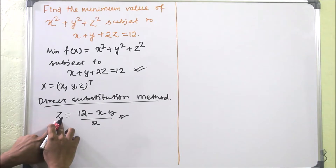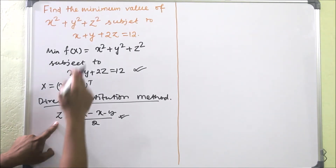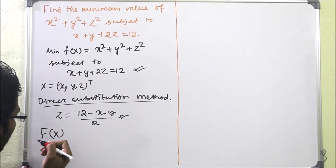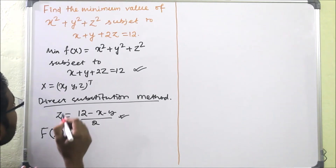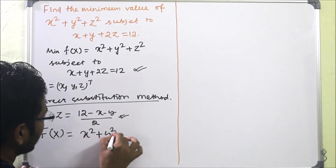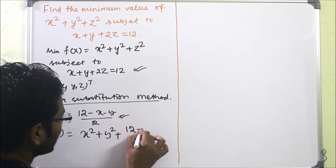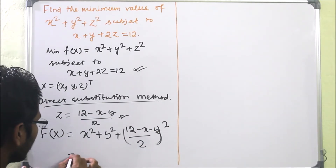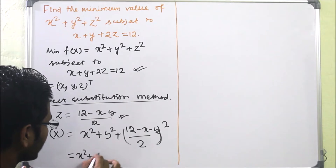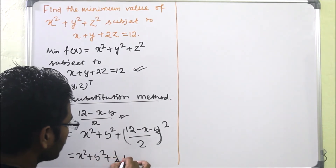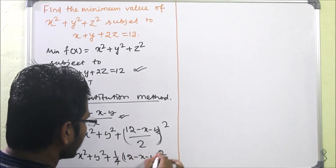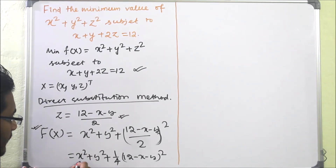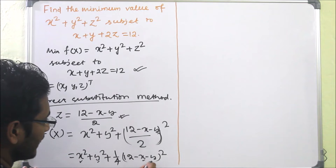Now we have z. We substitute this value into the objective function. The new objective function F(x, y) = x² + y² + (1/4)(12 − x − y)². We can see that this function is now a function of only two variables, x and y.